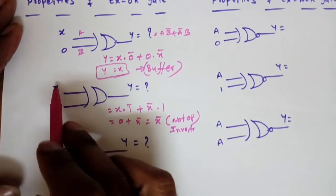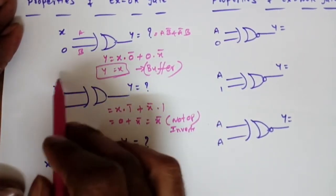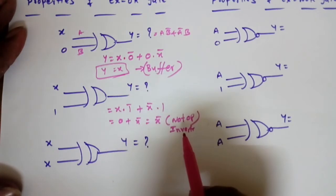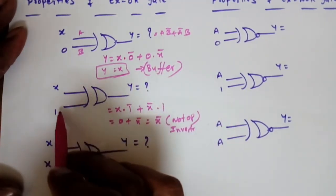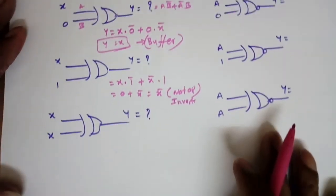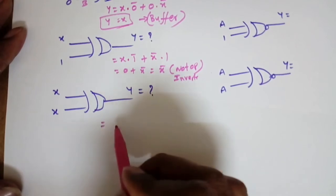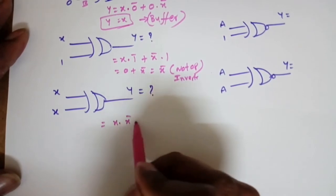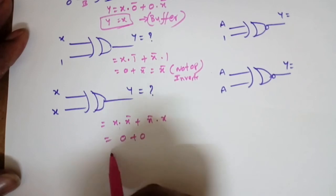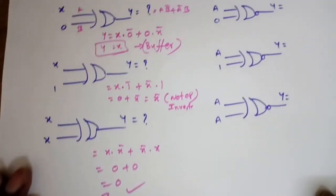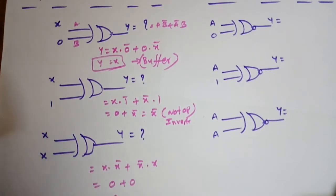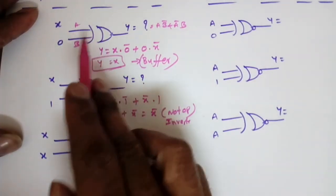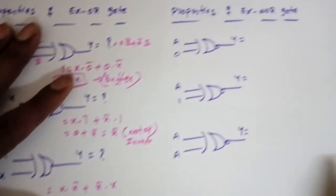If both inputs of the XOR gate are the same value X: Y = X·X̄ + X̄·X = 0 + 0 = 0. So when both inputs are the same, the output is always zero. To summarize XOR properties: it acts as an inverter when one input is connected to 1, acts as a buffer when one input is connected to 0, and gives output 0 when both inputs are the same.